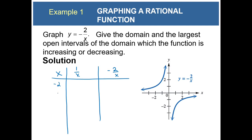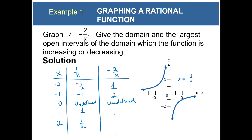Let's pick values for x: negative two, negative one, zero, one, and two. The reciprocal of negative two is negative one-half, the reciprocal of negative one is negative one, the reciprocal of zero is undefined, the reciprocal of one is one, and the reciprocal of two is one-half. Now multiplying by negative two: negative two times one-half is positive one, negative two times negative one is positive two, undefined times negative two is still undefined, one times negative two is negative two, and one-half times negative two is negative one.